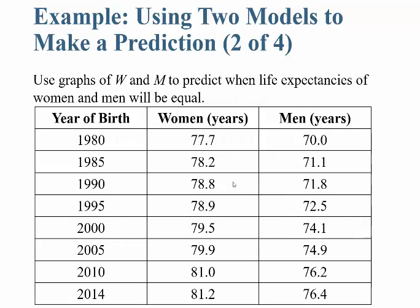Here's the table. From 1980 — the year of birth — women were expected to live 77.7 years, and men were expected to live 70.0 years. You can see that over time, getting to 2014, the life expectancy has gone up for both cases — each year it's higher than the year before.